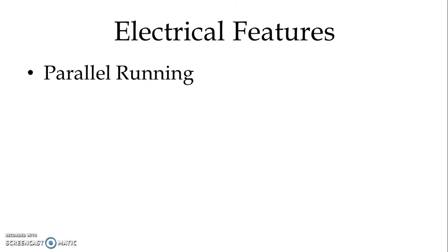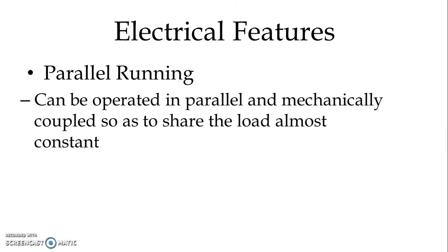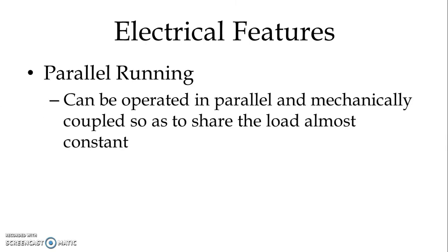The next electrical feature is parallel running. In the case of traction motors, we normally use more than one traction motor in parallel — there might be two, four, or six traction motors together. They must have characteristics that allow them to be operated in parallel and mechanically coupled so as to keep the load almost equal and constant.